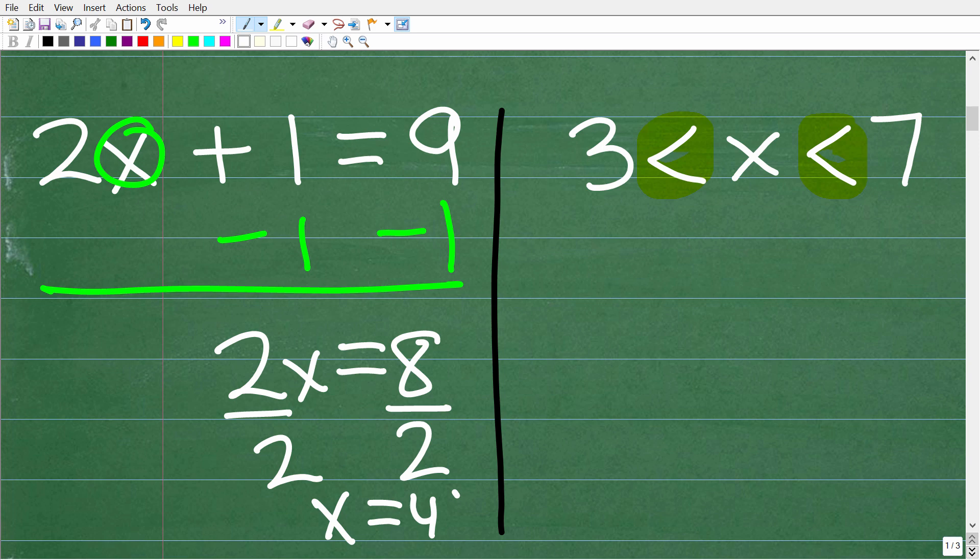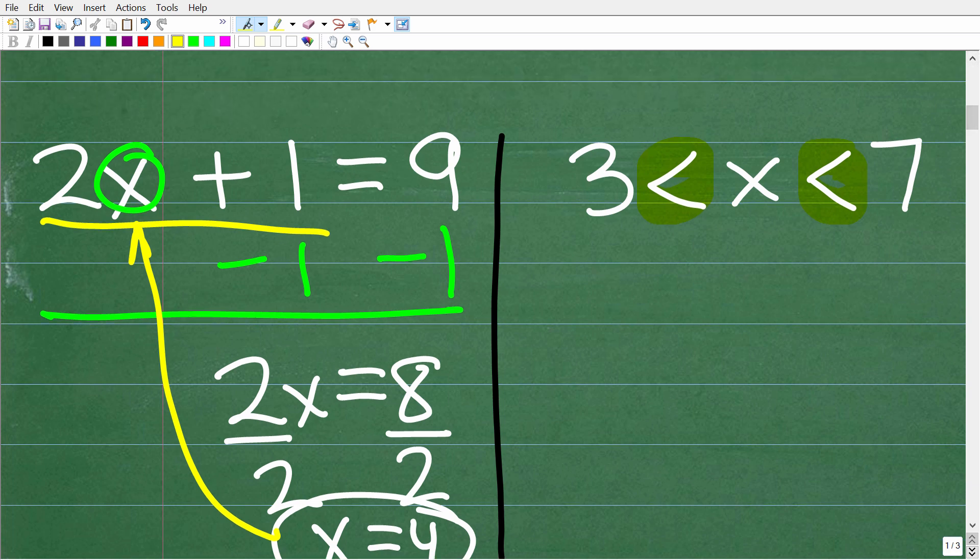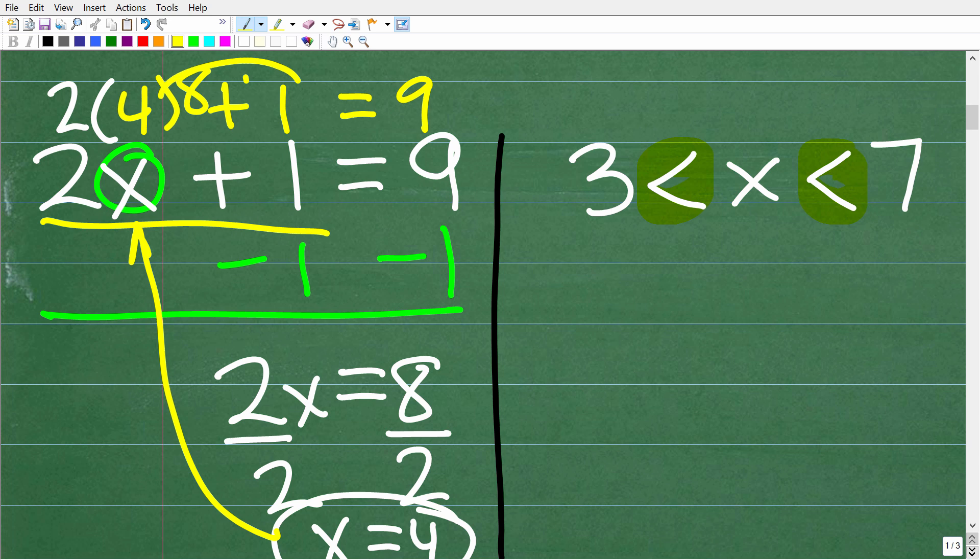So x is equal to 4. So if x is equal to 4 is the correct solution, what that means is if I replace this x with 4 and do this math on this side of the equation, hopefully it's going to be equal to 9. So we can check to see if we have the actual solution. So 2 times 4, anytime you are replacing a variable with a number, you always want to use parentheses. So let's go ahead and do that right here. So 2 times 4 plus 1, is this equal to 9? Well, 2 times 4 is 8. So 8 plus 1 is 9. So 4, indeed, is the solution.